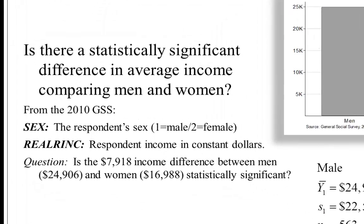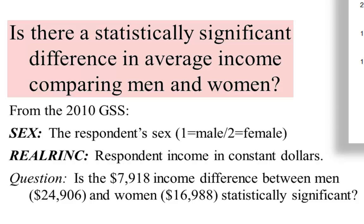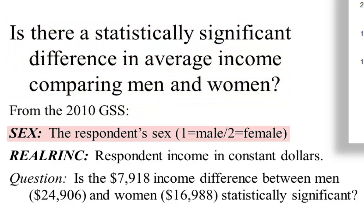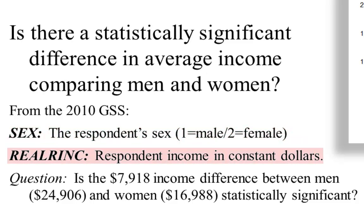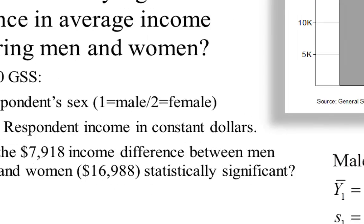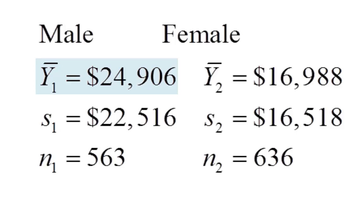Let's look at an example. We'd like to know if there's a statistically significant difference in average income comparing men and women in the 2000 GSS. There's a variable called 'sex' where 1 equals male and 2 equals female, and a variable called 'realrinc' — respondent income measured in constant dollars. Our dependent variable is income (continuous) and our independent variable is gender (male/female). Men on average made nearly $25,000 while women made about $17,000 — an observed difference of nearly $8,000.